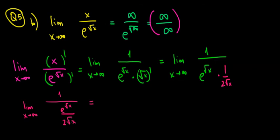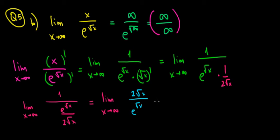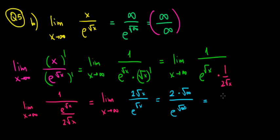Now, 1 divided by a fraction is the same as multiplying by the inverse. So we have the limit x approaching infinity, and now we have 2 square root of x divided by e to the power square root of x. Let's substitute infinity: 2 times square root of infinity over e to the power square root of infinity. Again, we're approaching very high values on both numerator and denominator, so this tends to infinity over infinity — undefined once more. So we differentiate again with L'Hôpital.